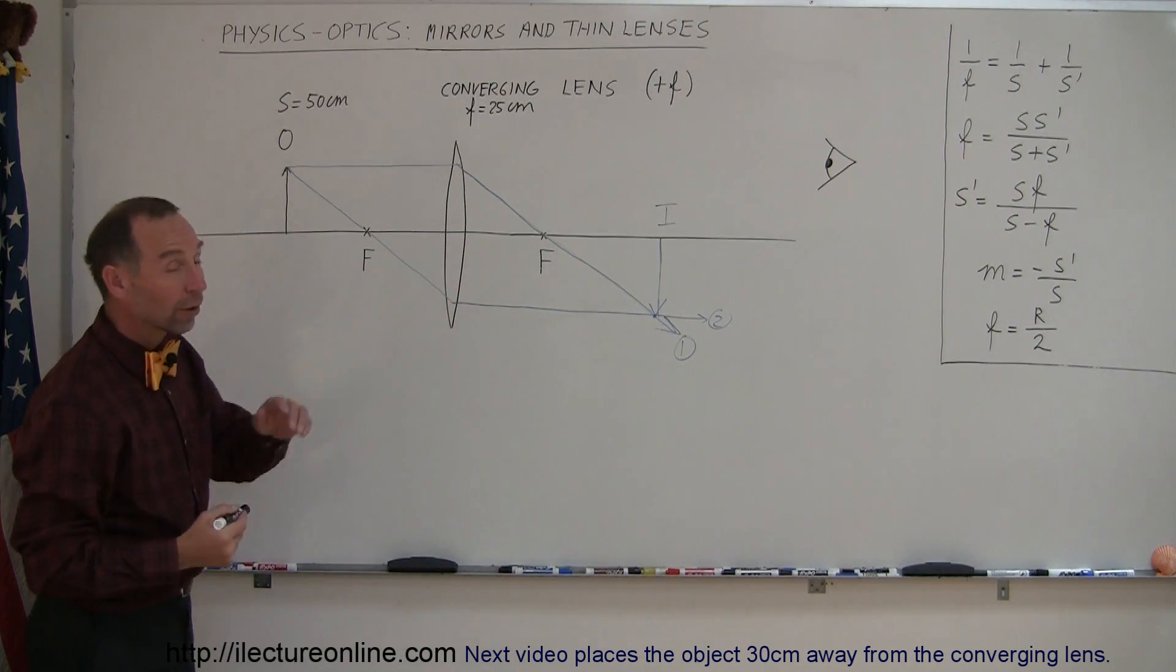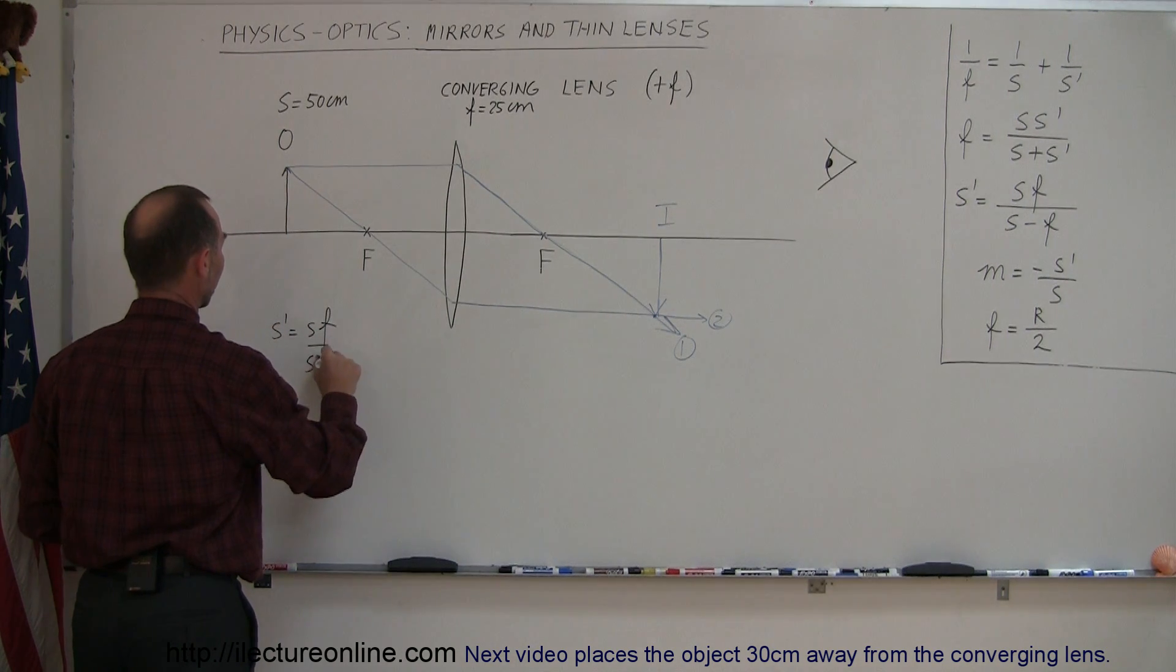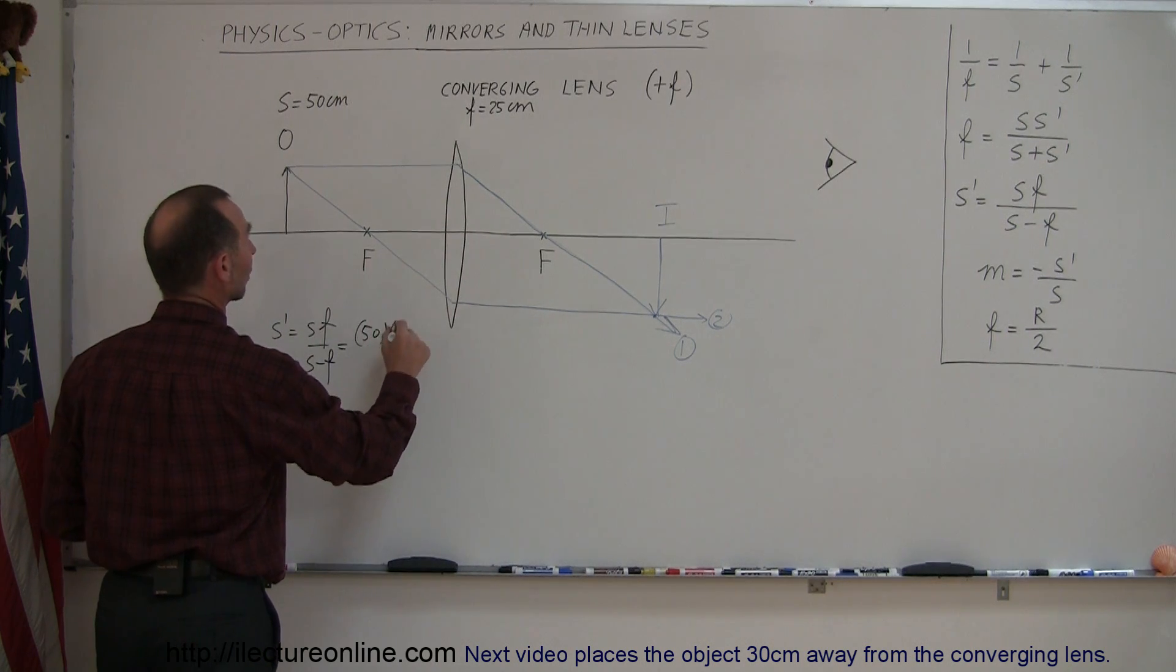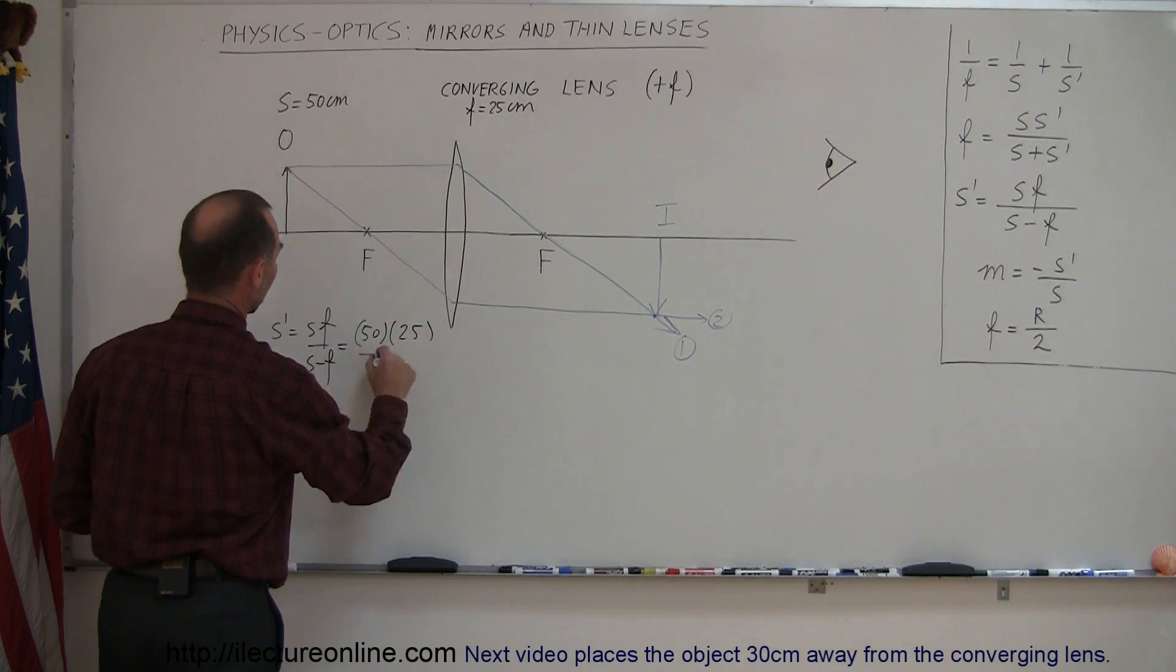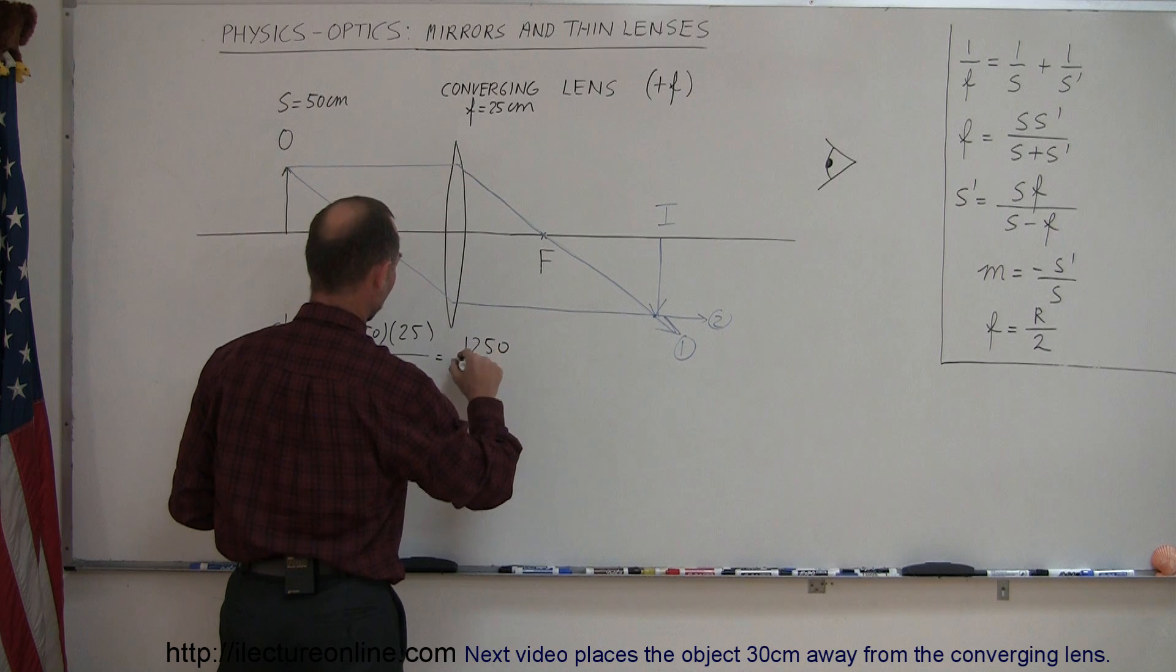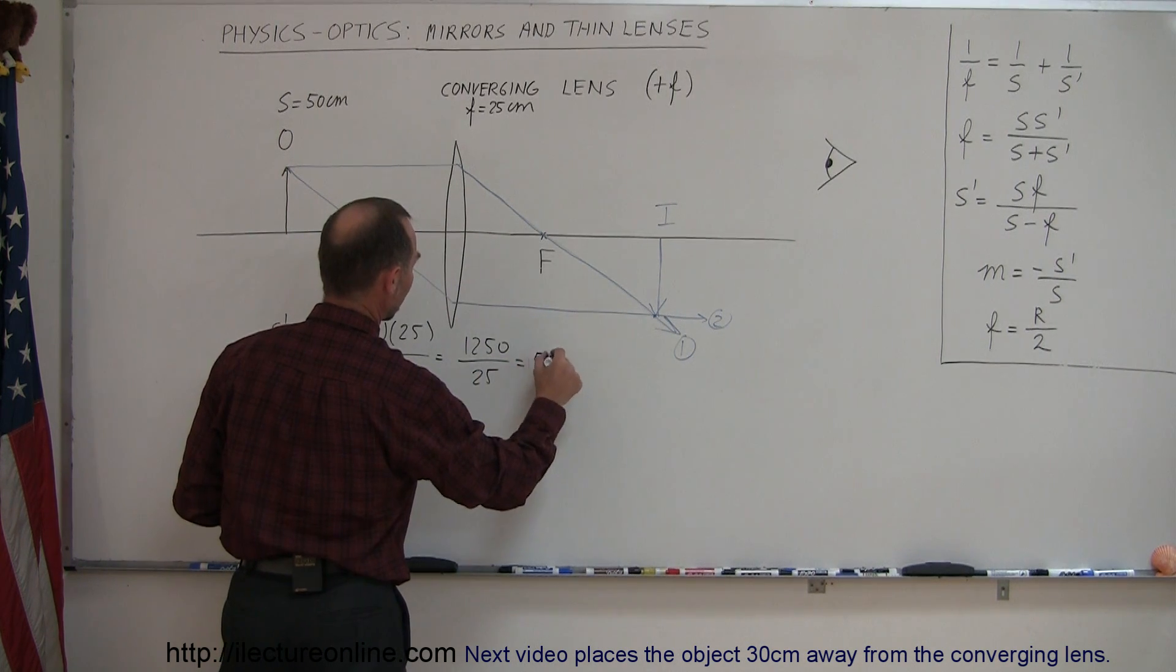So, using our equation, S prime is equal to SF over S minus F, so the object distance was 50 centimeters, the focal length was a positive 25, and here we have 50 minus 25. So, this is equal to, let's see here, that's 1250 divided by 25, which is equal to 50.